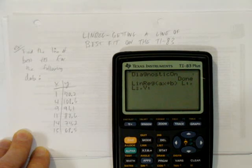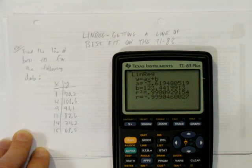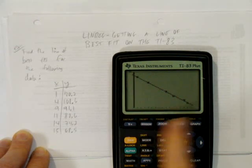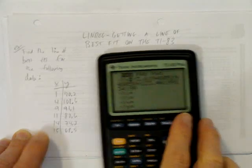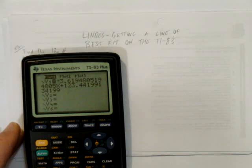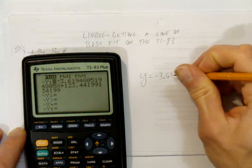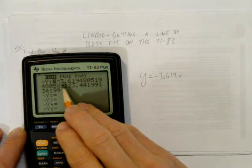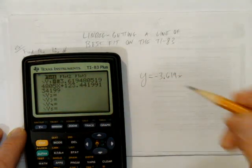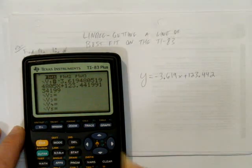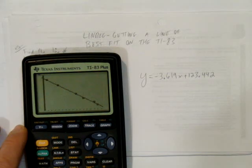We've got everything set to go, so we hit enter. The calculator thinks sometimes for a few seconds, and then gives us our answer. And there's our equation. If we want to see the graph, we just hit graph. And where our points were, the calculator draws a neat, steady line — that is a line of best fit for our data. If we want to see that equation again, we can go to y equals and there it is. We can write it down. Let's round to three decimal places. The line of best fit for this data is y equals negative 3.619x plus 123.442. That line of best fit is a good approximation of the pattern we see here on the graph.